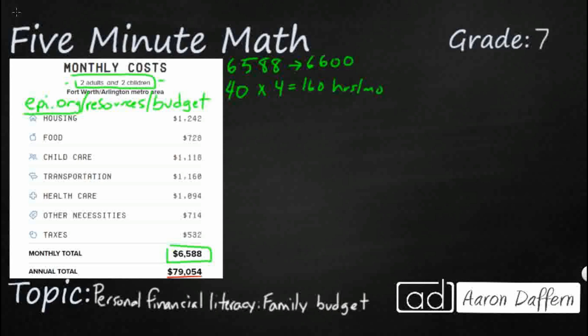So you need to make $6,600 a month and you're going to work 160 hours per month. Hopefully you see that we've got a fraction here, and we just need to do a little division — divide 160 hours into $6,600 to see what hourly rate we need to make.